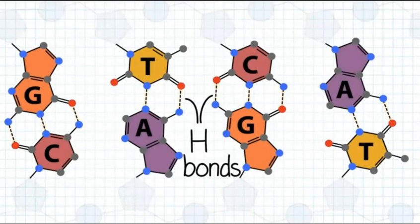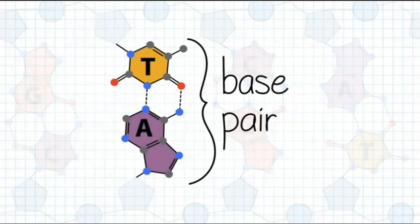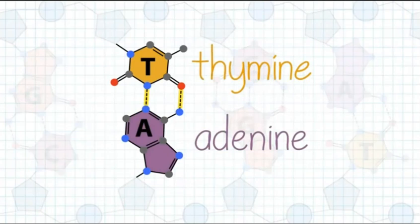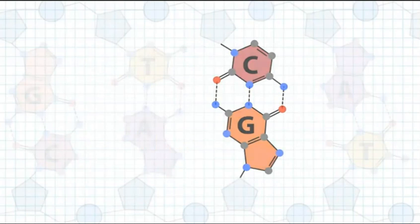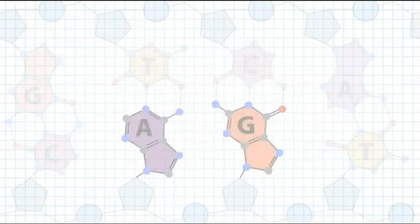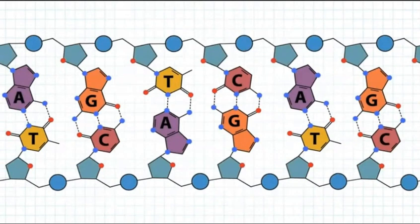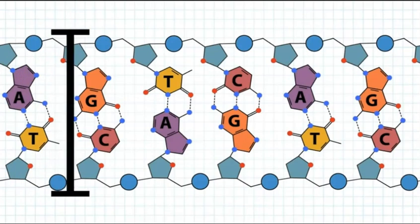Each base forms multiple hydrogen bonds with its complementary base on the opposite strand; bound together by hydrogen bonds, each unit is called a base pair. Thymine preferentially pairs with adenine through two hydrogen bonds, and cytosine preferentially pairs with guanine through three hydrogen bonds. Thymine and cytosine are called pyrimidines, characterized by their single-ring structure, and adenine and guanine are called purines, which have double rings. The geometry of AT and GC base pairs is the same, allowing for symmetry and base stacking in the helix. Each turn of the helix measures approximately 10 base pairs.